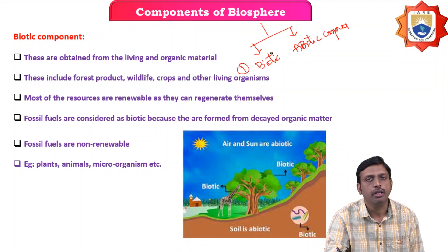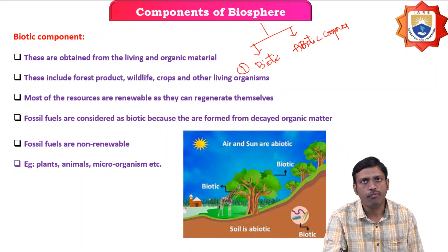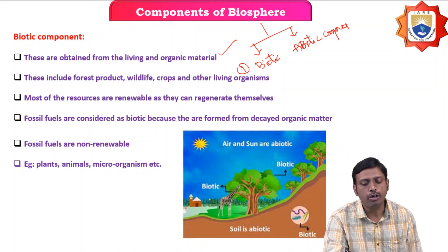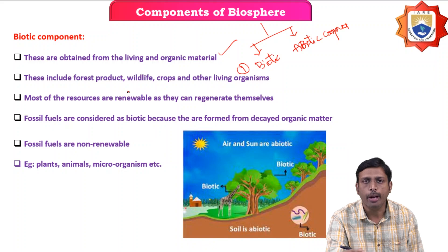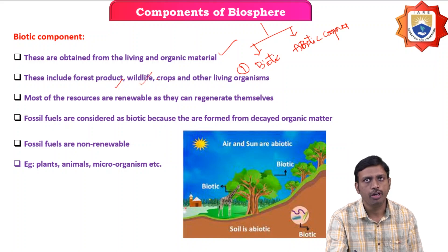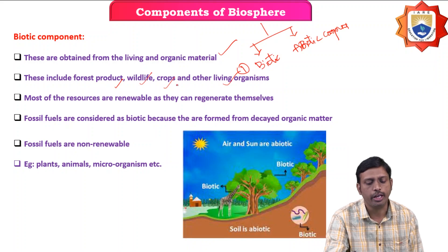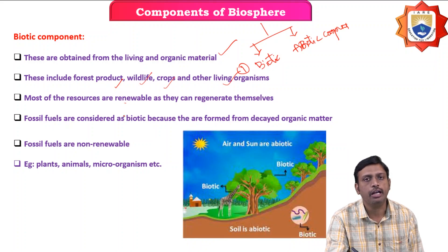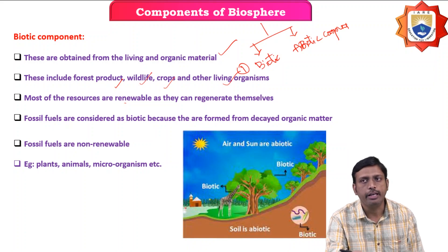The biosphere has two components: biotic and abiotic. The biotic component is obtained from living and organic material. It includes forest, wildlife, crops, and other living organisms. Most of these resources are renewable, which means they can be regenerated again and again.